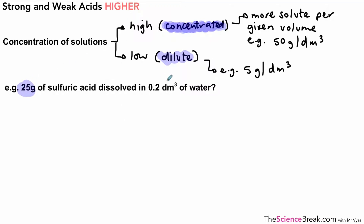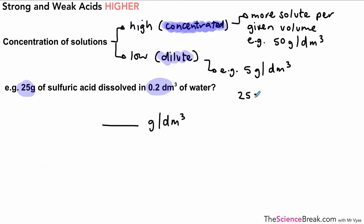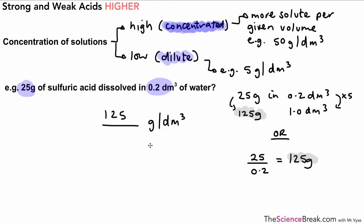We could do a quick calculation to work out the concentration of a solution. We've done this in detail before in a previous video, but imagine we had 25 grams of sulfuric acid dissolved in 0.2 decimeter cubed of water. What's the concentration? Well, 25 grams of our solute is in 0.2 dm³. We want to know how much in 1 dm³. We multiply by 5, so we do the same with our grams, and that gives us 125 grams. You can also just do 25 divided by 0.2 and that will give you the same answer: 125 grams per decimeter cubed.